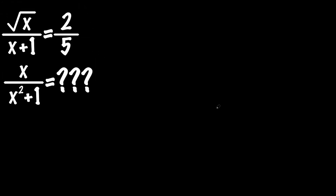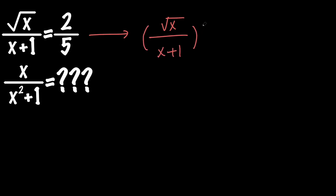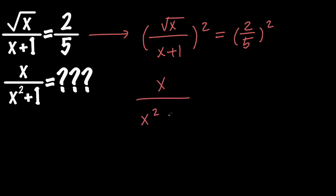In the first method we're going to solve the given equation for x. To do that, let's go ahead and square both sides. So we have root x over x plus 1, all squared, equals 2 over 5 all squared. This will be simplified to x over x squared plus 2x plus 1 equals 4 over 25.